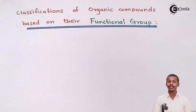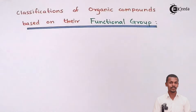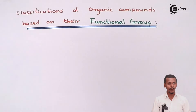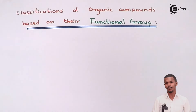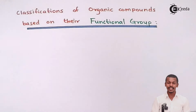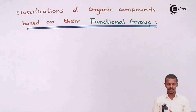Not only based on structure can we differentiate or classify organic compounds — because of functional groups also we could easily classify them. The functional group plays a very important role in understanding the chemical property of a particular organic compound, its structure, and many other things.